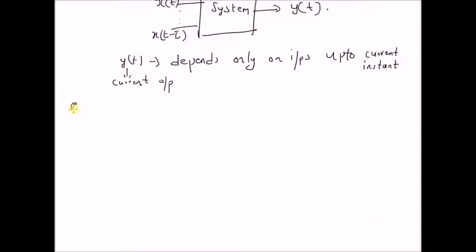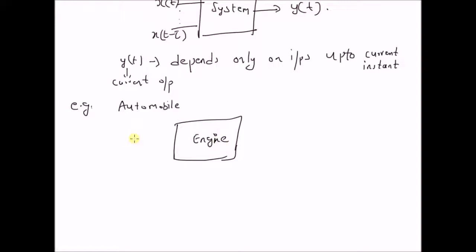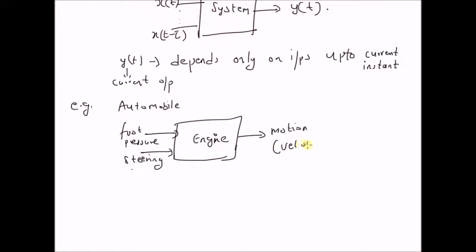A classical example of a causal system is an automobile. The system has, for example, an engine as one of the subsystems, and the possible inputs are the driver's foot pressure and the steering control. The output is basically dependent on the inputs up to the current instant. The future decisions of the driver cannot influence the past output. Thus, the automobile engine is a causal system.